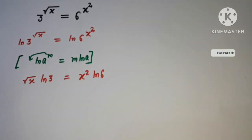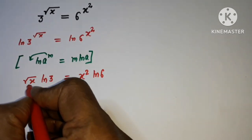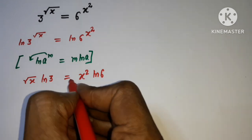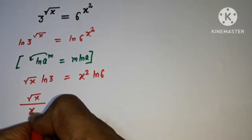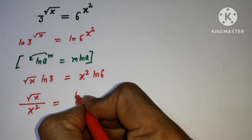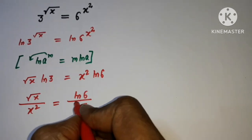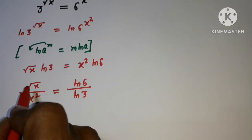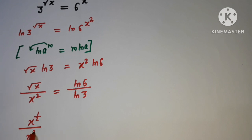So we can write all the variables on the left side. We get root x times ln 3 on the left, and x squared times ln 6 on the right. This gives us x to the power 1/2 on the left side and x to the power 2 on the right side.